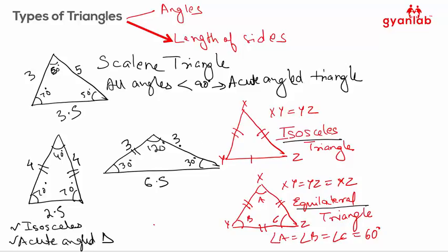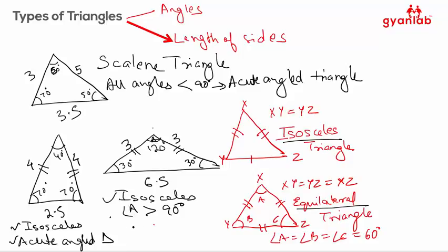The second triangle has sides 3, 3, and 6.5 with angles 30 degrees, 30 degrees, and 120 degrees. It also has two sides equal, so this is an isosceles triangle. But one of its angles — angle A — is greater than 90 degrees, so this becomes an obtuse angled triangle. Using all the properties we learned today, you can easily find out the types of triangles. I hope you had fun learning about the different types of triangles. Thank you.